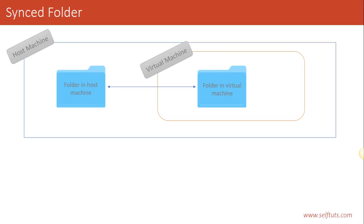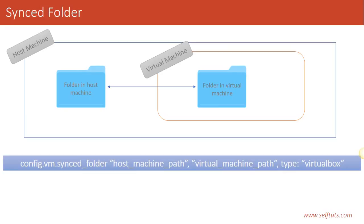How do we set up a sync folder? Inside the Vagrant file, which contains all the configuration for our virtual machine, we can add a new configuration line. It says: config.vm.synced_folder, where the first parameter is the host machine path (the Windows machine path), the second is the virtual machine path (the path inside the virtual machine), and the third is the type of provider. Currently we are using the provider type as VirtualBox. So we can configure synced folder with just a single line inside our Vagrant file.